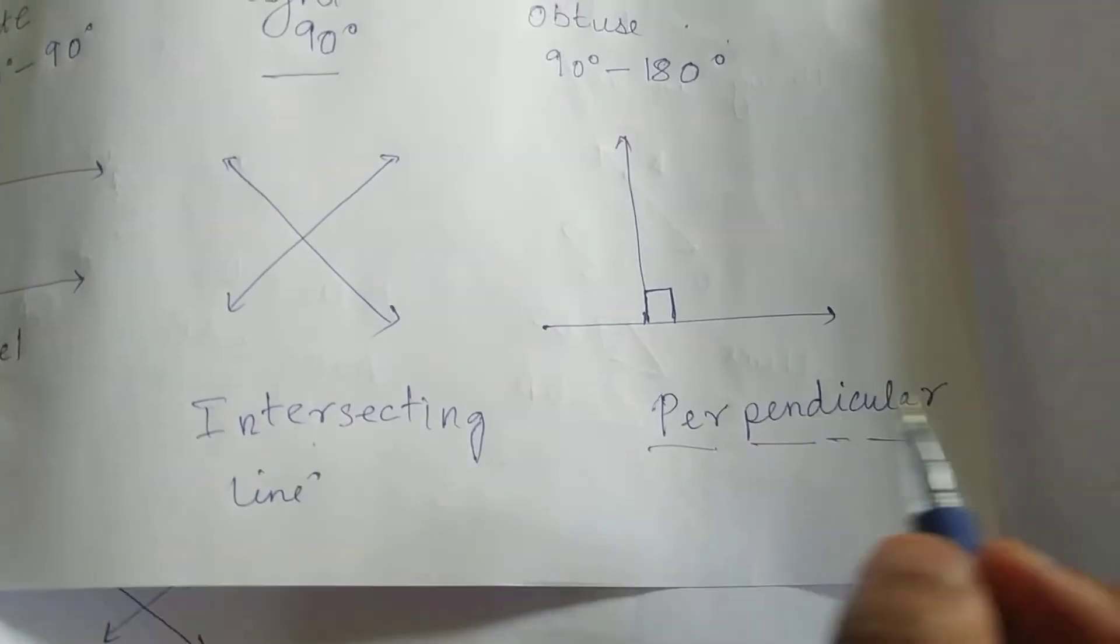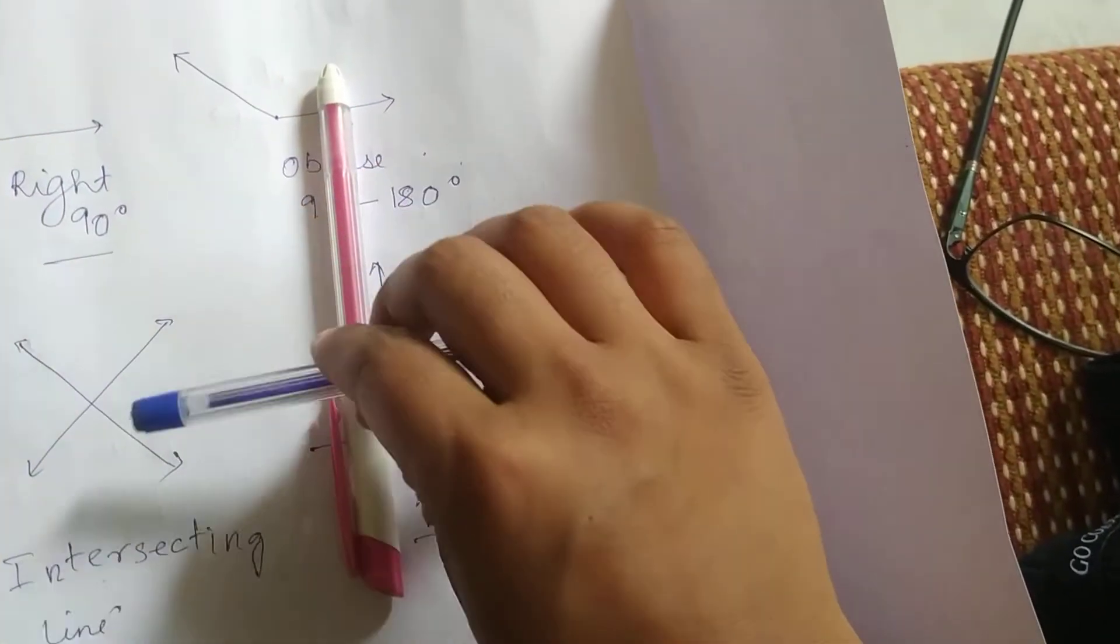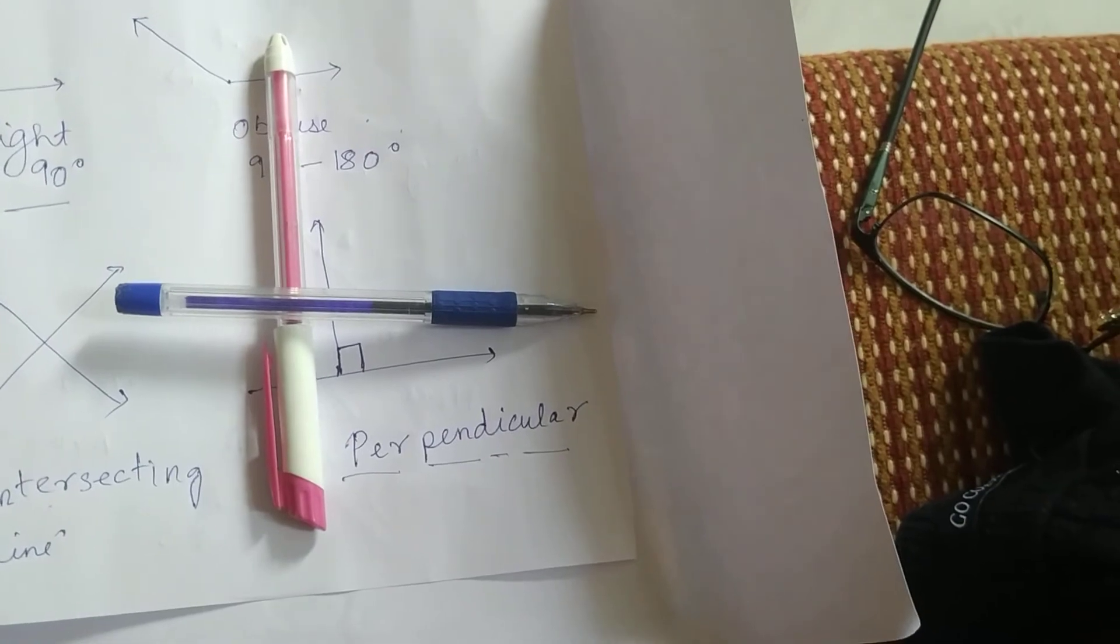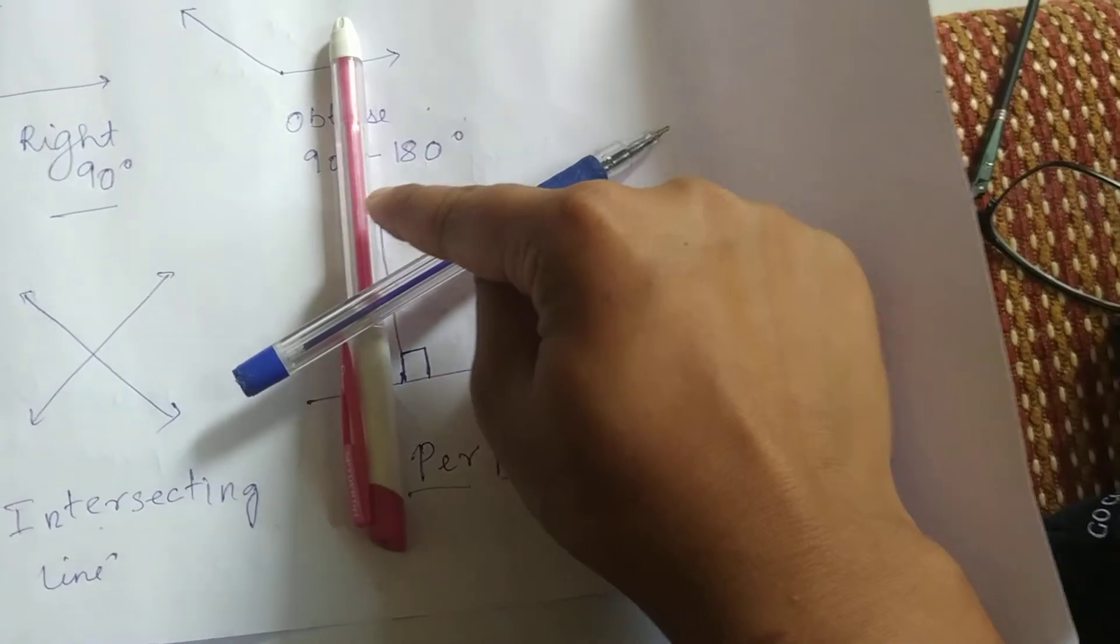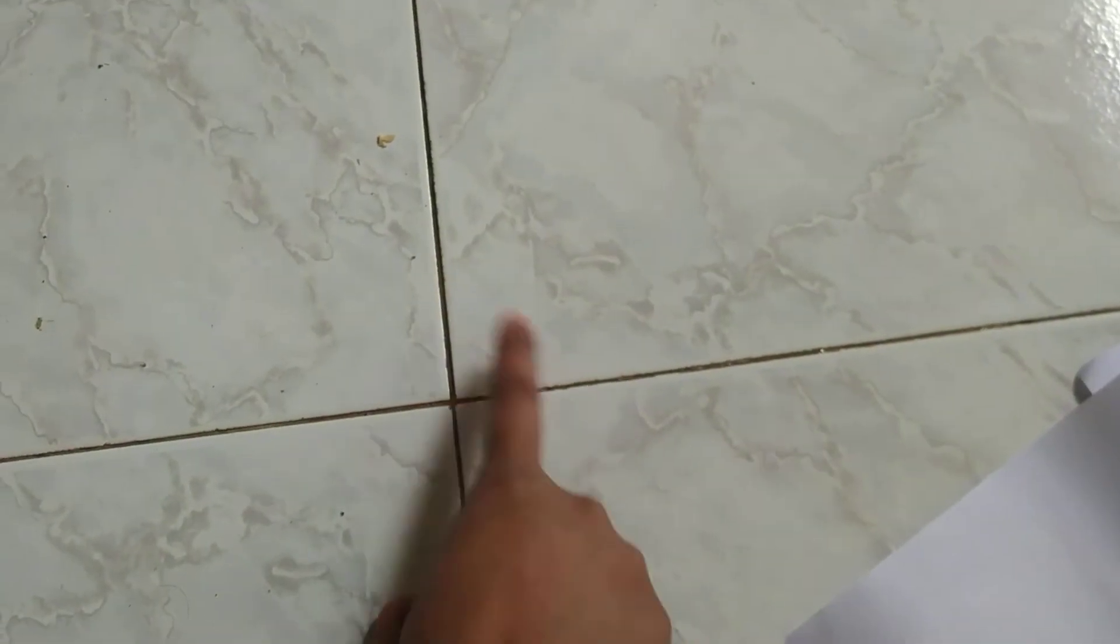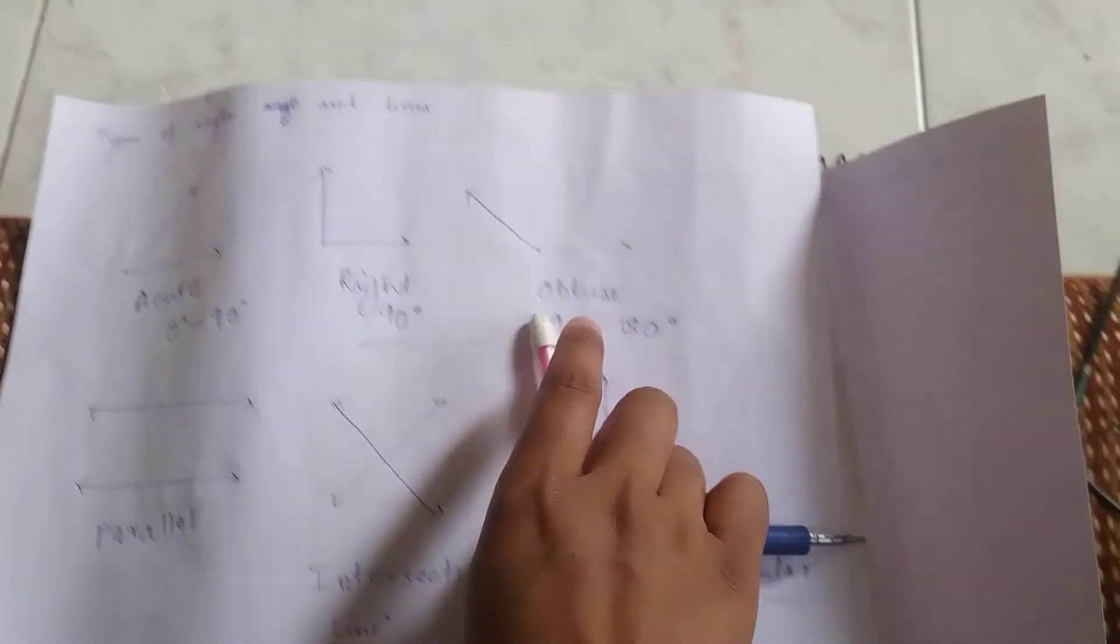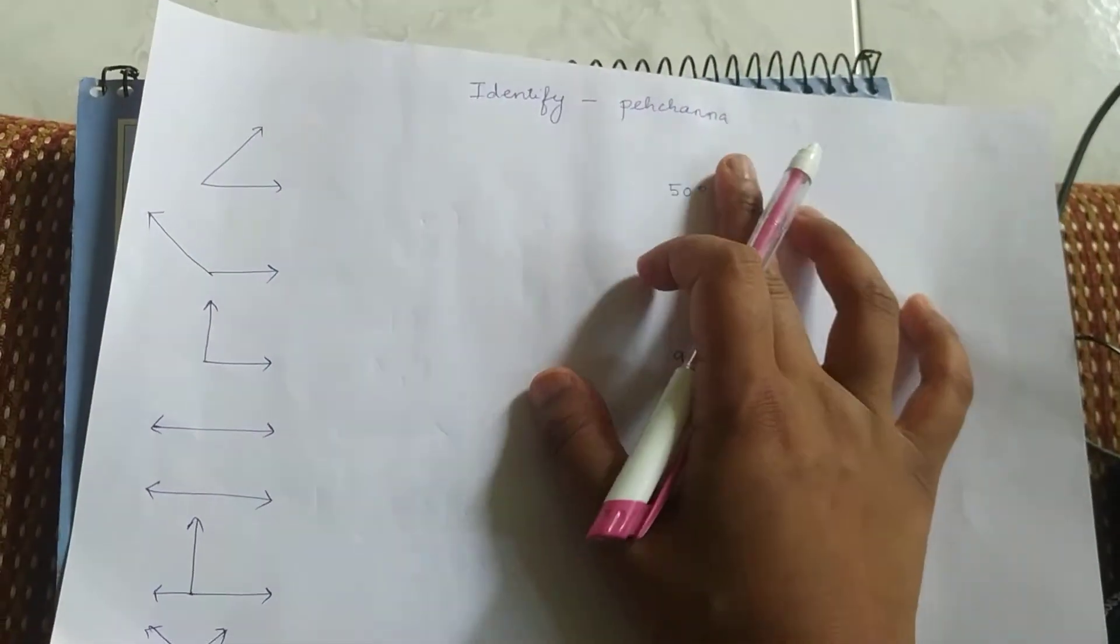Perpendicular is a special type of intersecting line. Perpendicular line is what happens when two lines cross each other and make 90 degrees. So if these two lines crossed each other and this angle is 90 degrees, then we call it perpendicular. When you see these two lines, these two are perpendicular lines because this is 90 degrees.